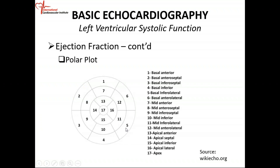Outside of that is the base — the mitral valve level — and again you have six segments: anterior wall, inferior wall, inferior lateral wall, anterior lateral wall, anterior septum, inferior septum. So this is the polar plot, where you put everything together. When you look at reports coming from various hospitals, you'll see a lot of polar plots because you can pack a lot of information into this simple little diagram.